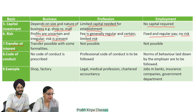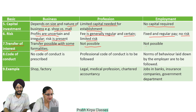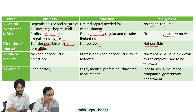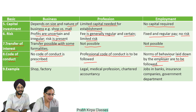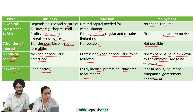Seventh, transfer of interest: in case of business, transfer of interest is possible with some formalities; in case of profession and employment, transfer of interest is not possible. Eighth, code of conduct: in case of business, no code of conduct is prescribed; in case of profession, a professional code of conduct is to be followed; in case of employment, norms of behavior laid down by the employer are to be followed. Ninth, examples: business — shop, factory; profession — legal, medical profession, chartered accountancy; employment — jobs in banks, insurance companies, government departments.